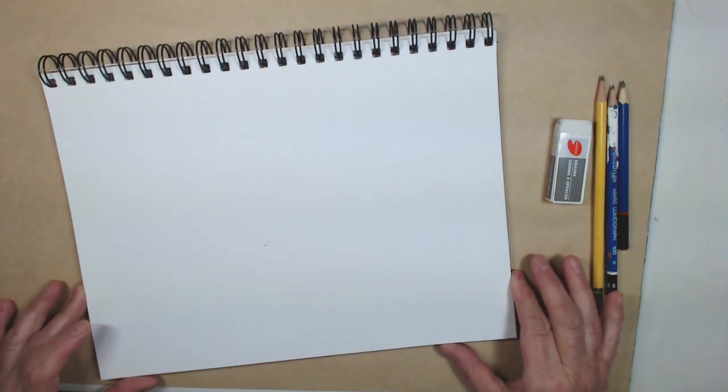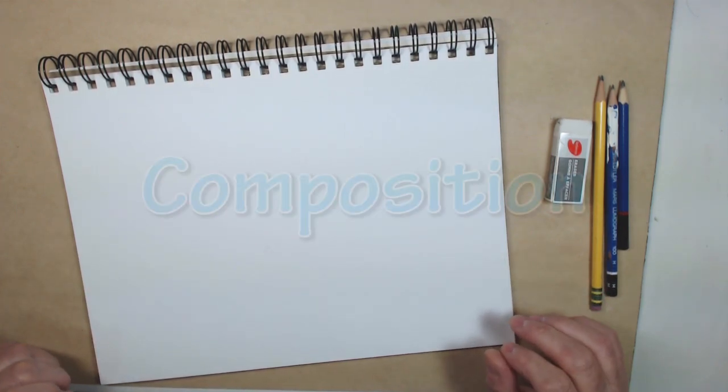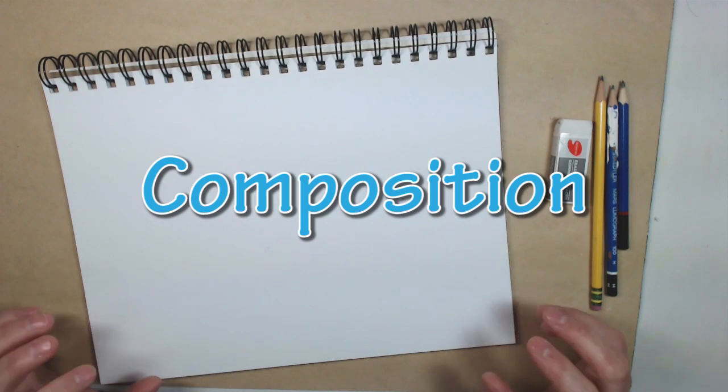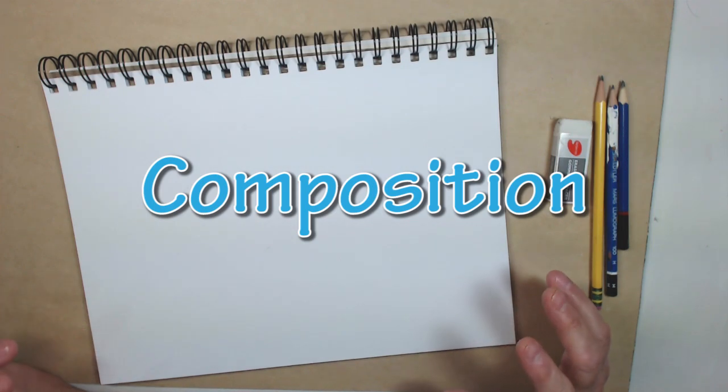Okay, so now that I've picked my objects I need to create an interesting composition for me to draw. So what is a composition? A composition is how you arrange your items for your drawing or your painting or any type of artwork.